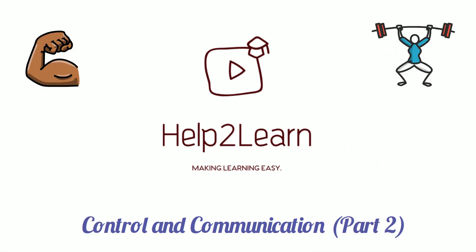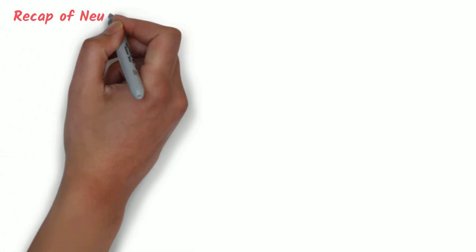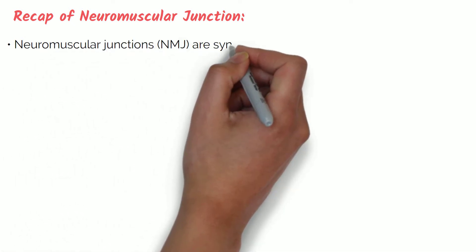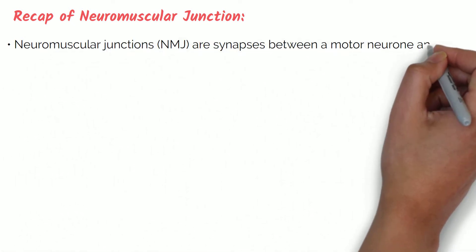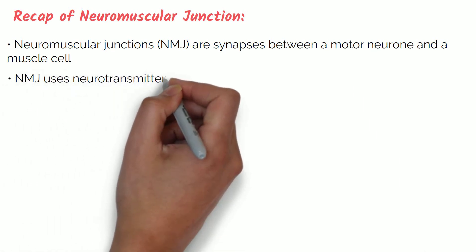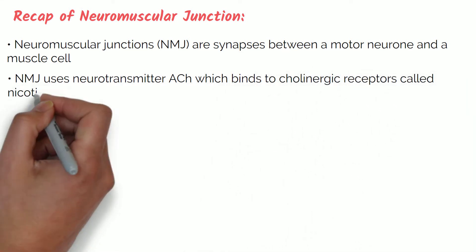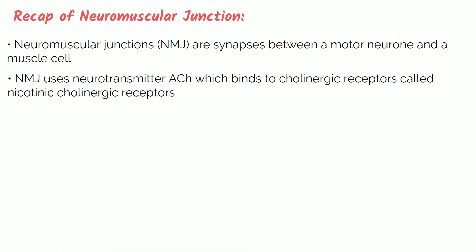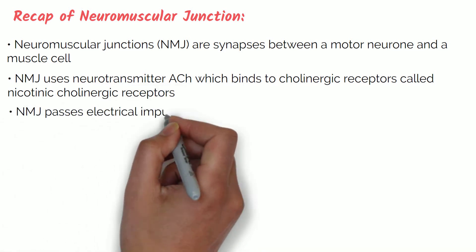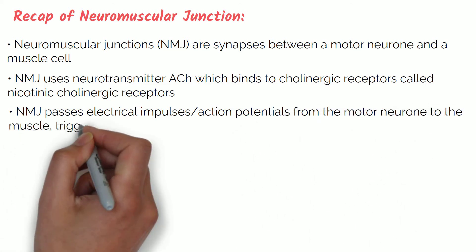As covered briefly before, muscles receive the communication to contract from the nervous system. The neuromuscular junctions or NMJ are synapses between a motor neuron and a muscle cell. The NMJ uses the neurotransmitter acetylcholine, which binds to cholinergic receptors called nicotinic cholinergic receptors. The NMJ passes electrical impulses or an action potential from the motor neuron to the muscle, triggering muscle contraction.